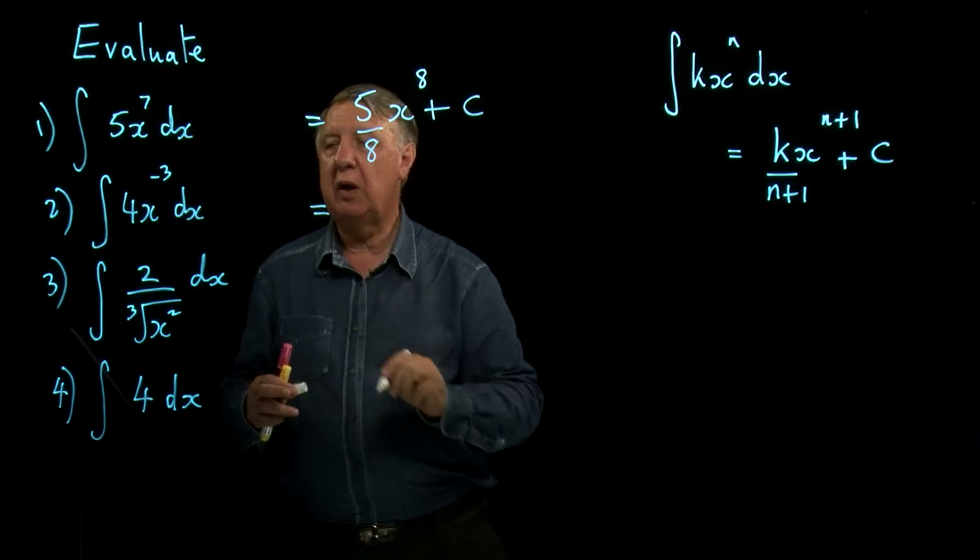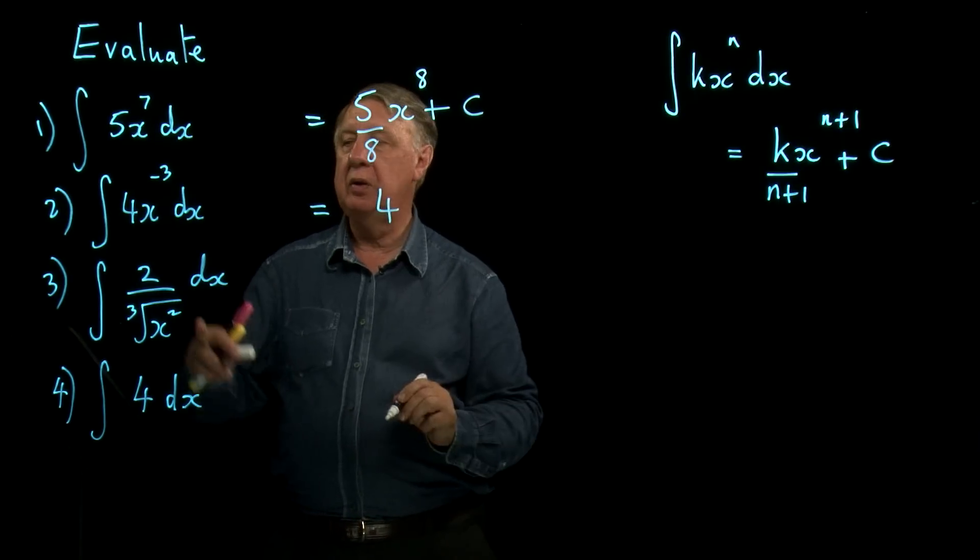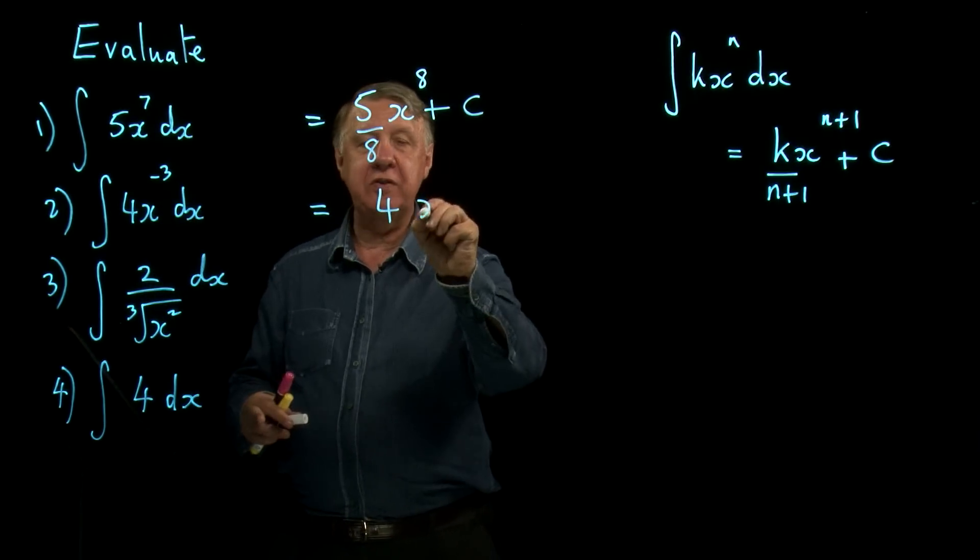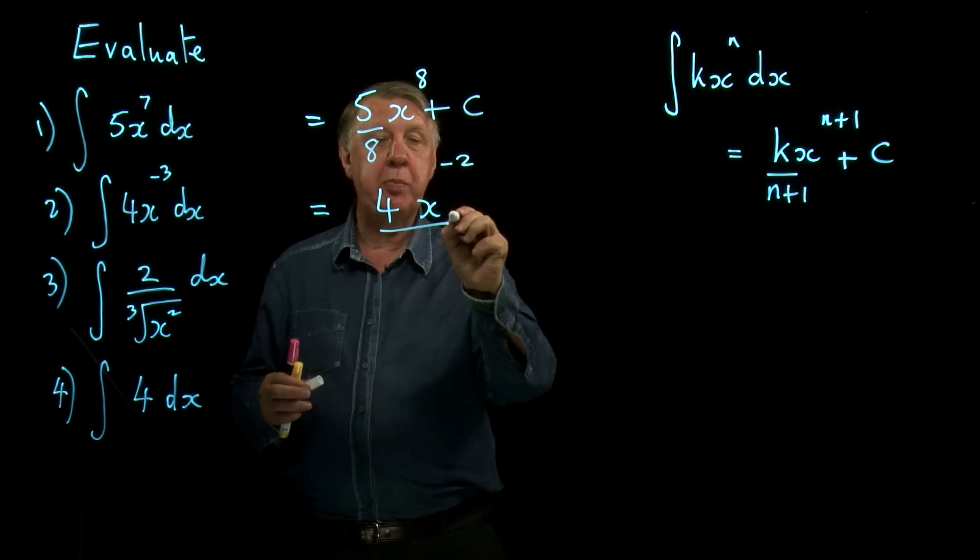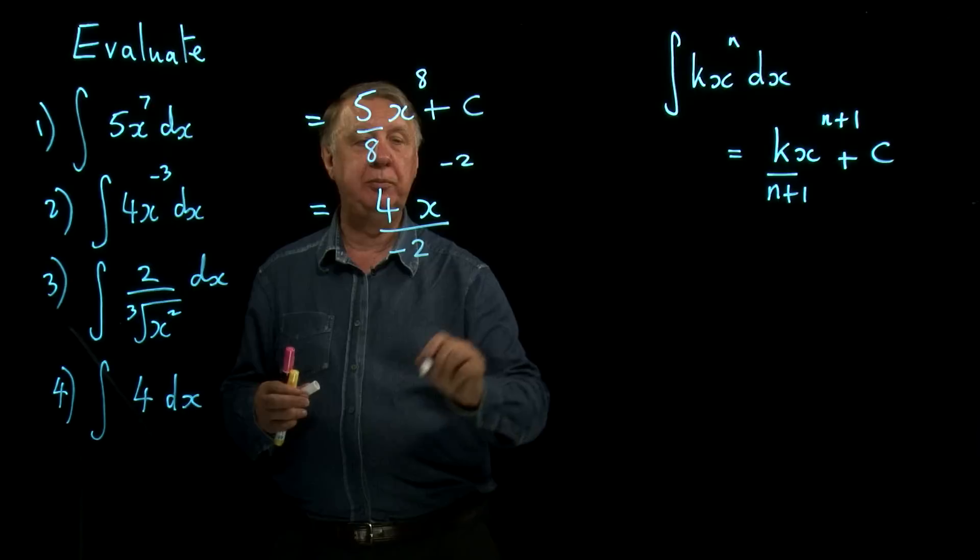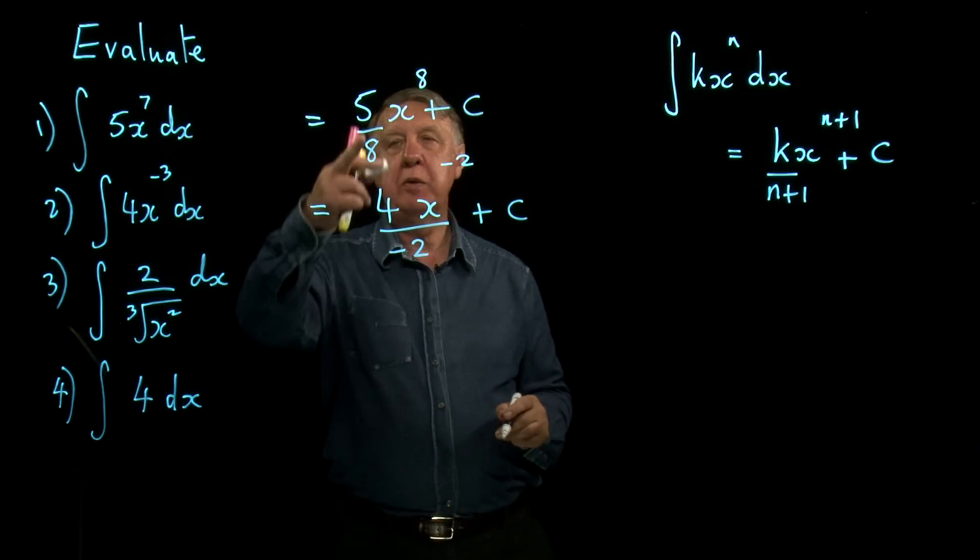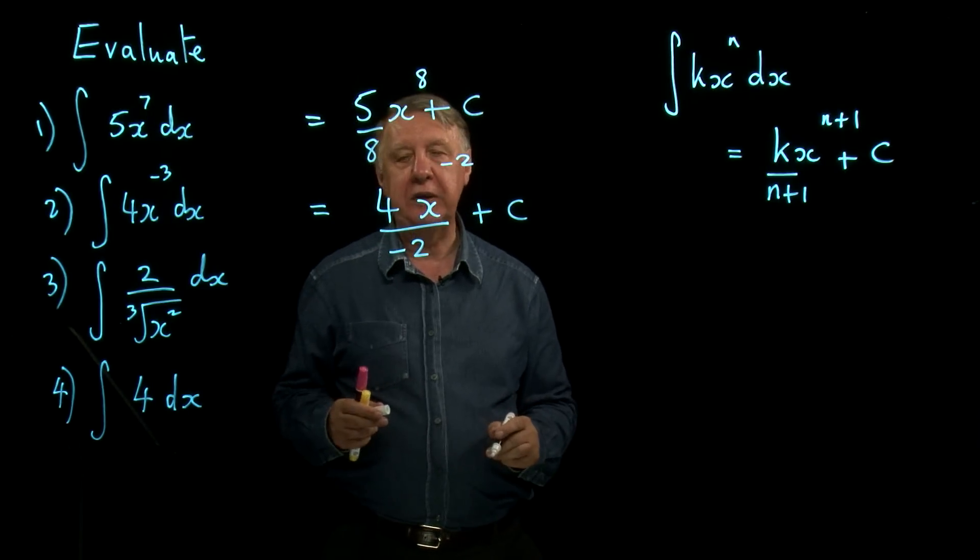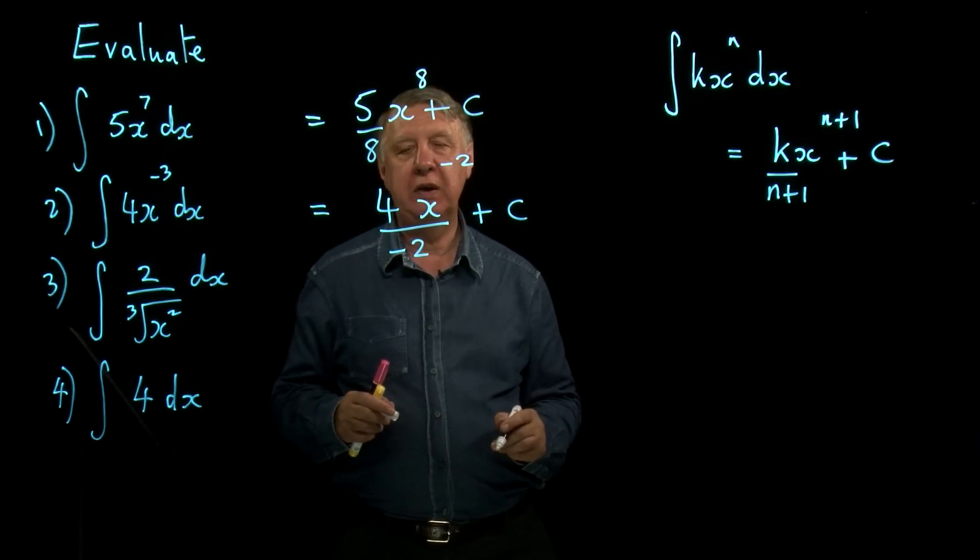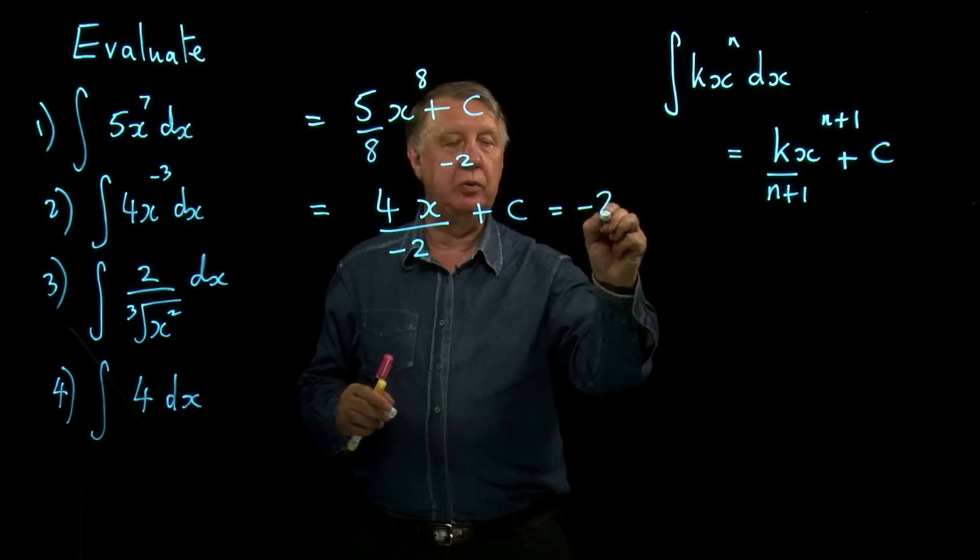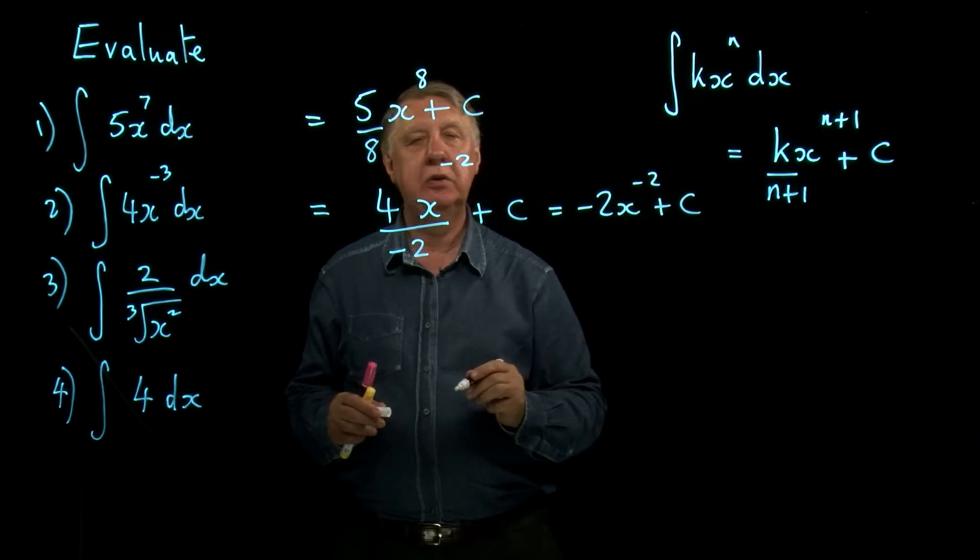So that's the way to think of it. So this one here and you'll see why this is easier to do that way. So 4, we don't have to worry about the 4. x to the, add 1 to the power. So if you add 1 to negative 3 you get negative 2. Divide by the new power. Now in the previous example we couldn't simplify 5 over 8. Here of course we can simplify 4 over negative 2 which is negative 2. So the answer is negative 2x to the negative 2 plus c.